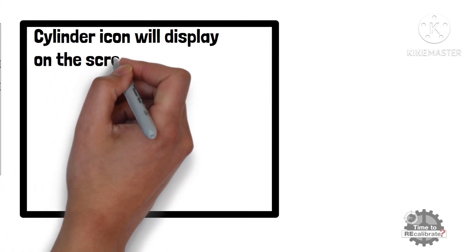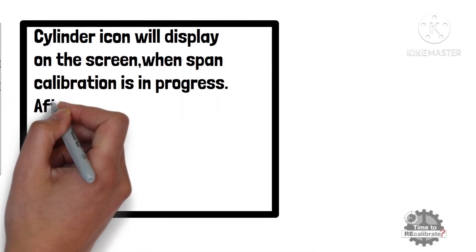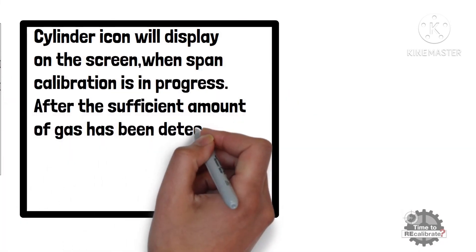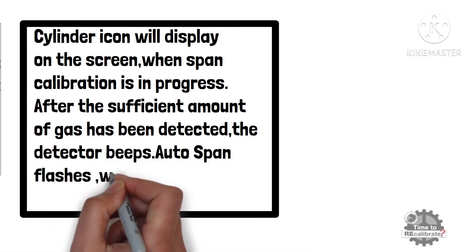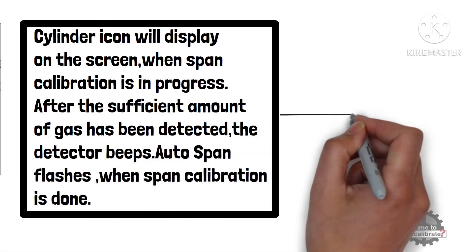When span calibration is in progress, you can see cylinder symbol on top of the display. When the device detects sufficient amount of gas, the detector beeps.